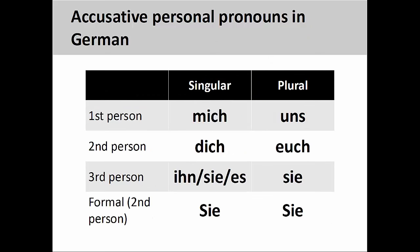Like English, accusative personal pronouns in German are organized by number, person, and gender. Singular: mich, first-person singular; dich, second-person singular; ihn, masculine third-person singular; sie, feminine third-person singular; es, neuter third-person singular. Plural: uns, first-person plural; euch, second-person plural; and sie, third-person plural. The formal personal pronouns, both singular and plural, is Sie, which has a capitalized first letter.